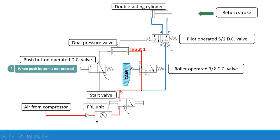From this it will enter. On this side this is the block position because the push button is not operated or pressed, so the air will go from this side. This is the roller operated 3x2 direction control valve. The cam is pressing this particular roller, so we are obtaining the left envelope mode here. The air from this path will go over here, and this is the first input that is provided to the dual pressure valve.